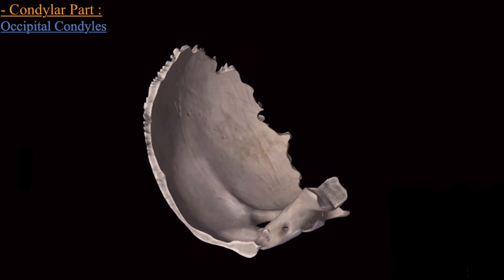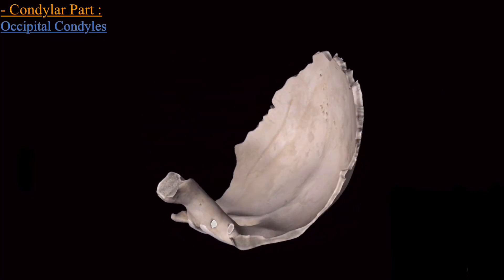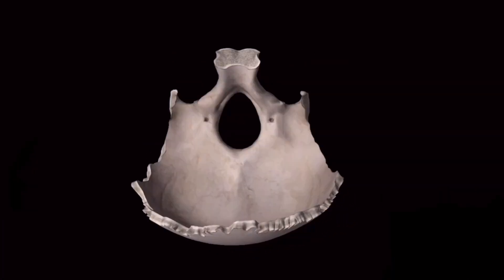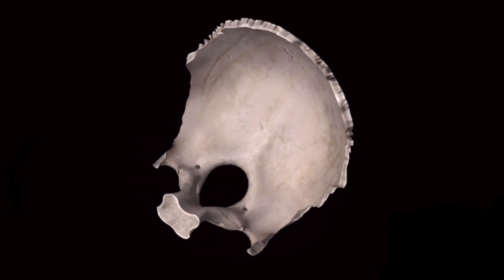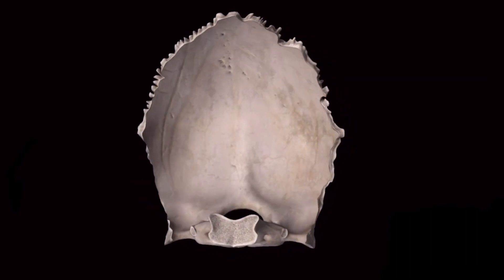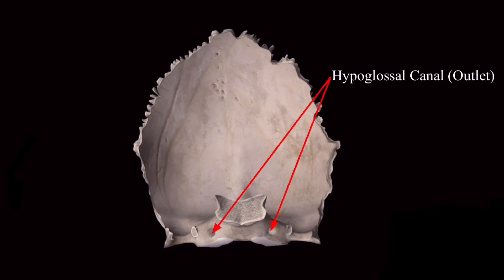Above the condyles, a foramen is present on either side called the hypoglossal canal. The hypoglossal canal passes through the occipital bone from its inlet on the superior view to the outlet below.